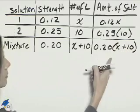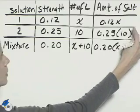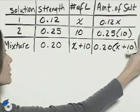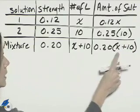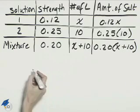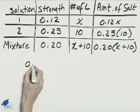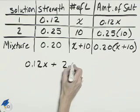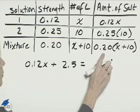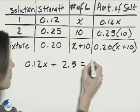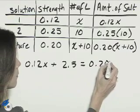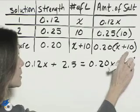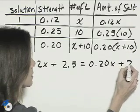In this last column, we'll have the equation where the amount of salt from the first solution plus the amount of salt from the second solution equals the amount of salt in the mixture. We'll have 0.12x plus 0.25 times 10 is 2.5, equals 0.20 times x, and 0.20 times 10, which is plus 2.